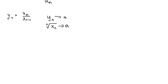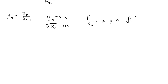One really cool consequence of this is that we know the Fibonacci numbers are closely tied to the golden ratio — the ratio of two consecutive Fibonacci numbers approaches the golden ratio. By this theorem, the nth root of the nth Fibonacci number also approaches the golden ratio, which I think is very cool.